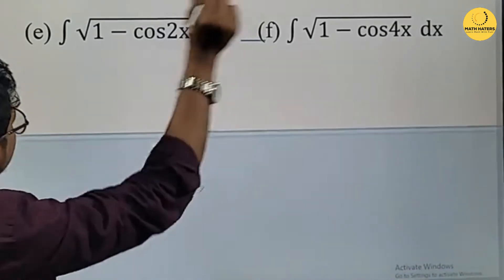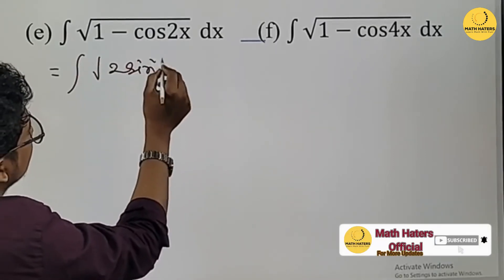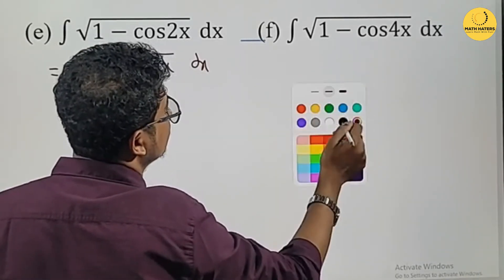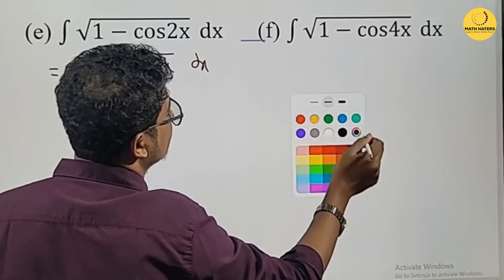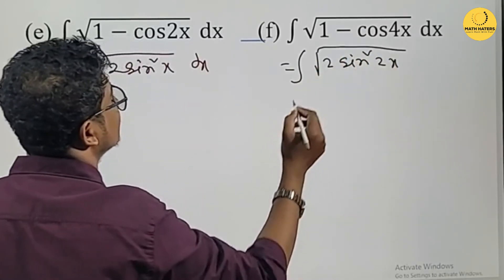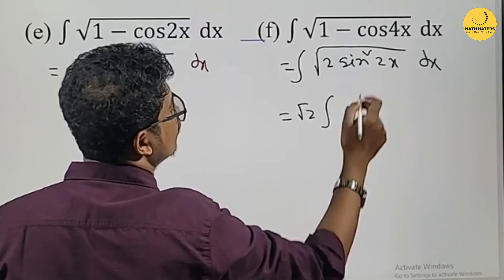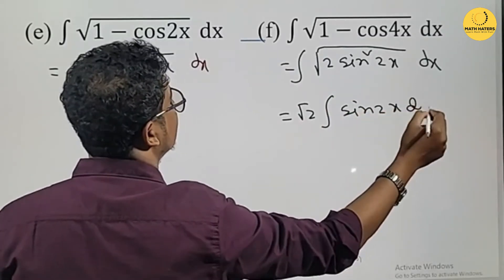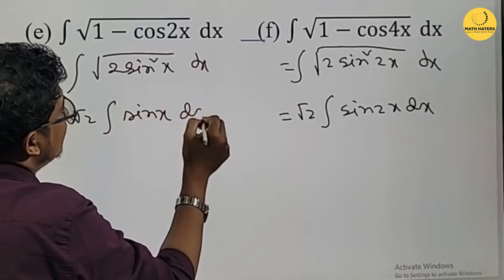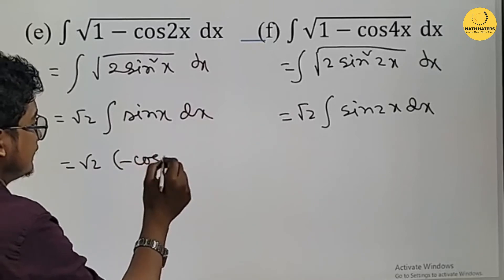Now, 1 minus cos 2x equals 2 sin² x, and 1 minus cos 4x equals 2 sin² 2x. Applying this with root 2 dx, we get the integration of sin 2x dx. Then, integration of sin x dx. And integration of sin x gives minus cos x plus c.